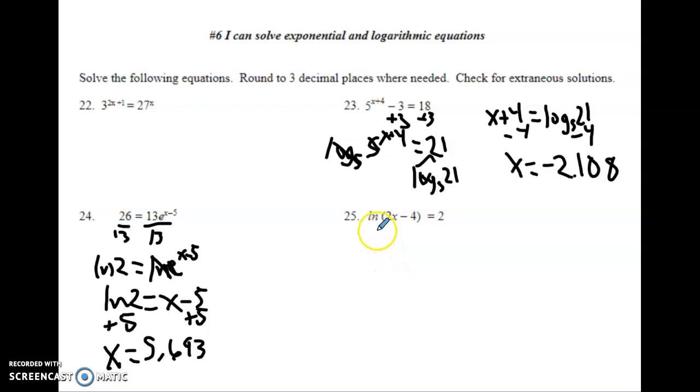Number 25. So to get this x alone, the last thing that's happening to it is it has that natural log, so if I raise everything to the power of e, then the e and the natural log base is going to cancel out, and you just get 2x minus 4 equals e squared.